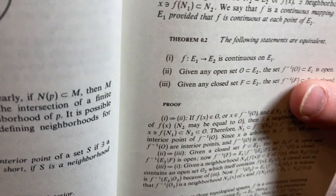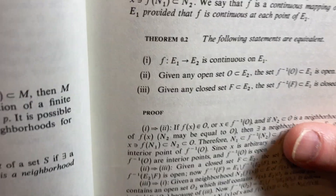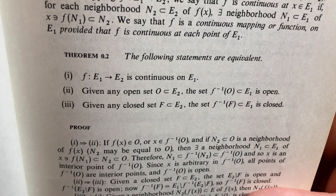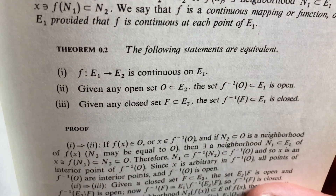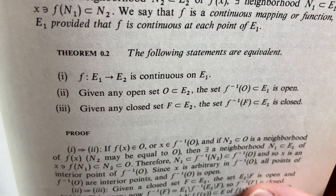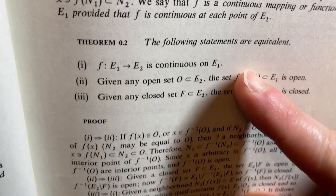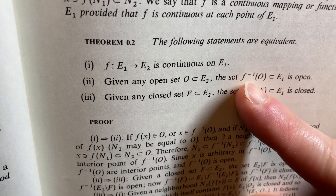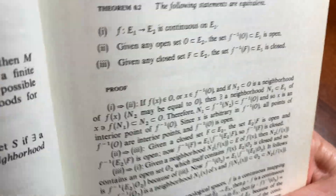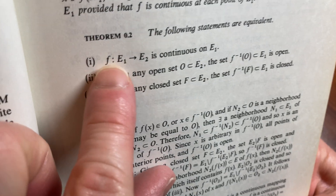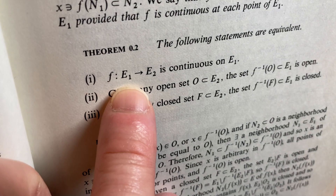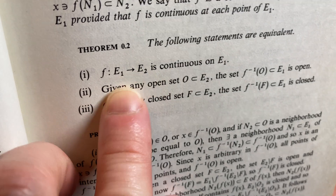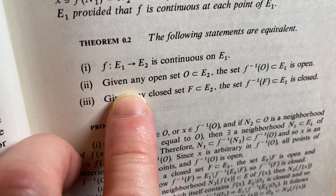Here's an example — Theorem 0.2. The following statements are equivalent: this function is continuous on E1. E1 is the domain, E2 is the codomain — it's a mapping. That's equivalent to: given any open set that's a subset in the codomain, the preimage of that set in the domain is open.